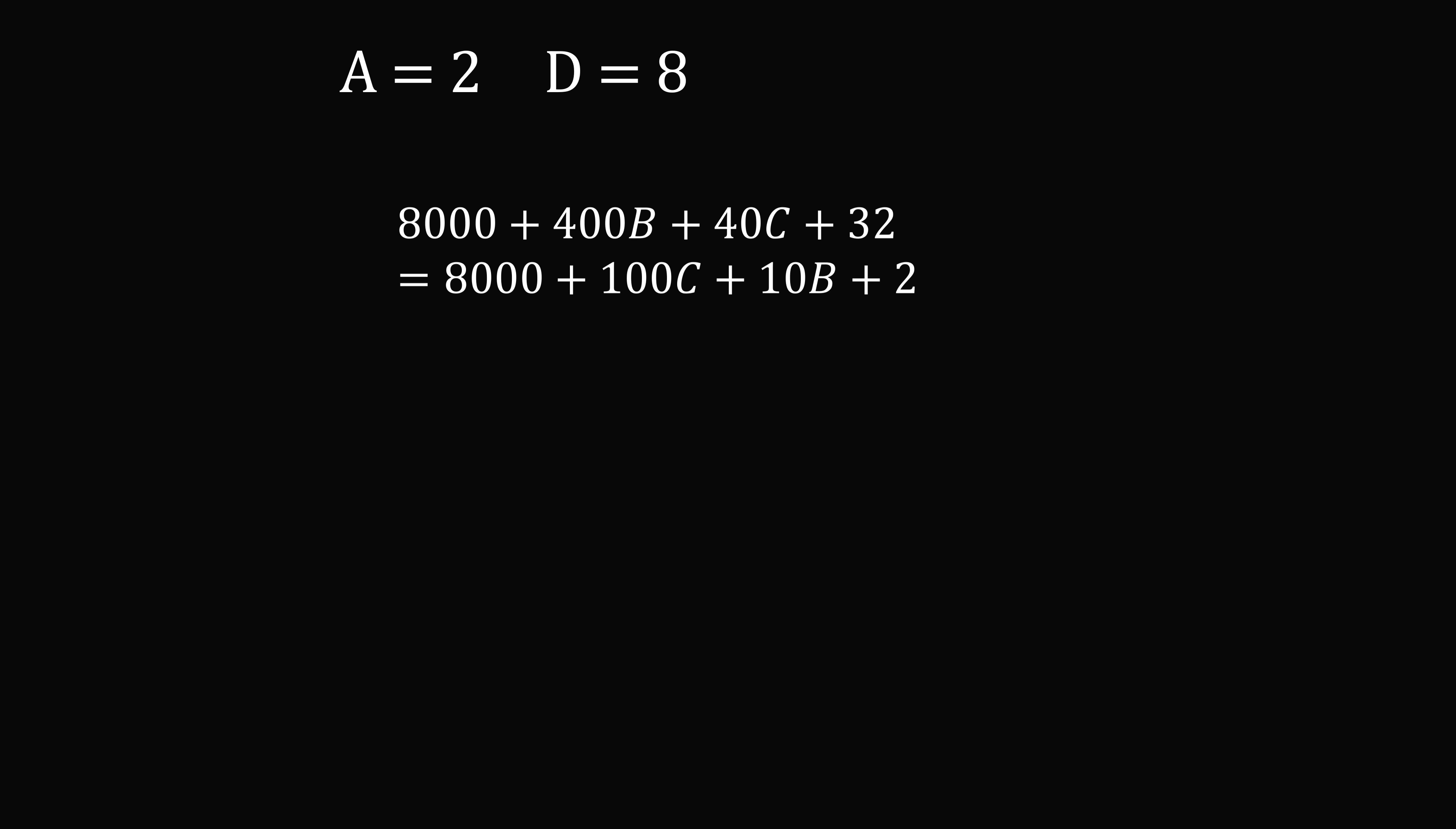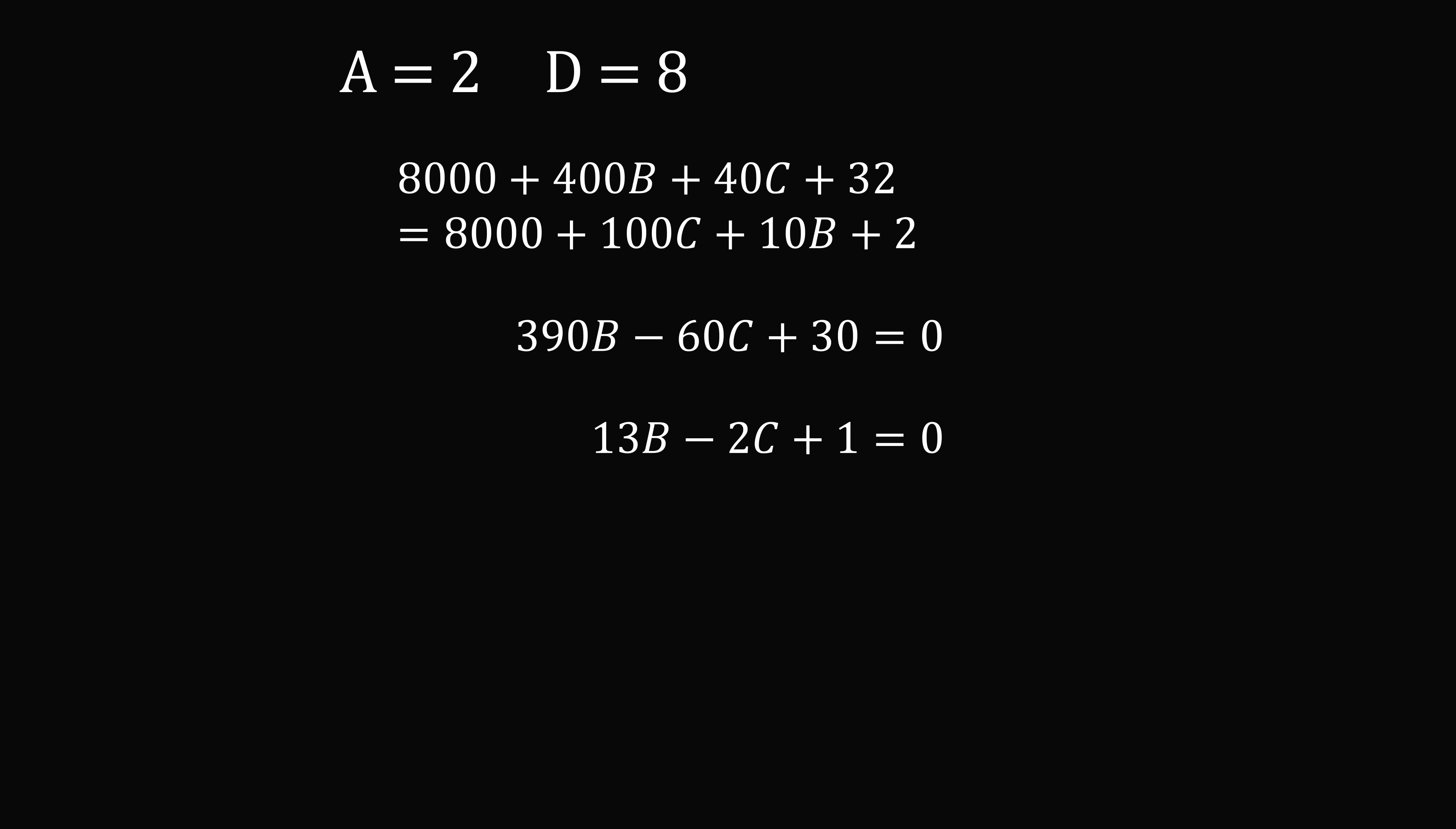So let's simplify this. We have 8,000 on both sides. Then we have 30 minus 2, so that'll be equal to 30. Then we bring over 400B minus 10B, and 40C minus 100C. So we get 390B minus 60C plus 30 is equal to 0. We divide both sides of the equation by 30. We get 13B minus 2C plus 1 is equal to 0.